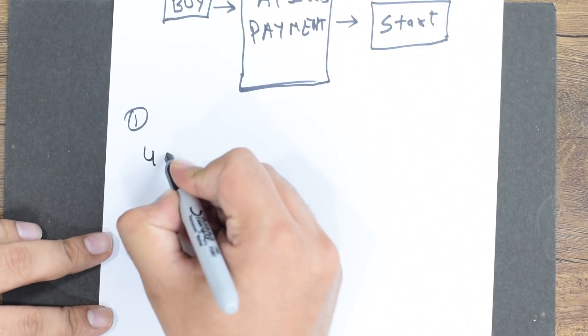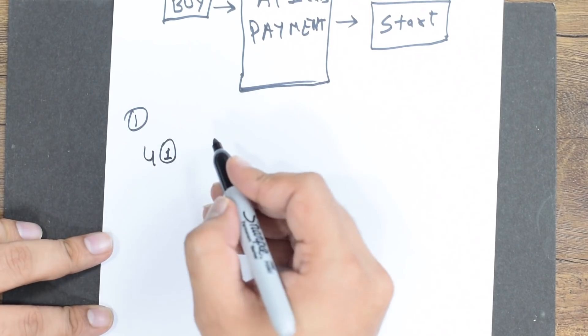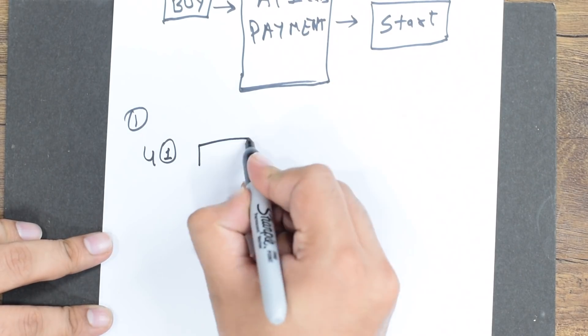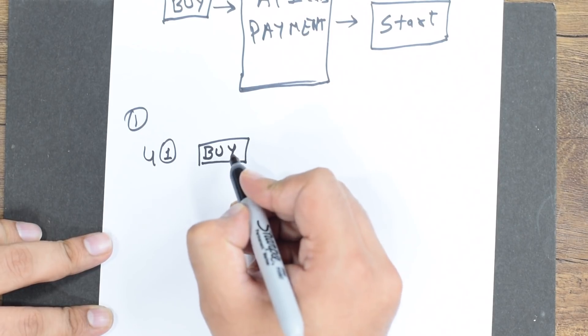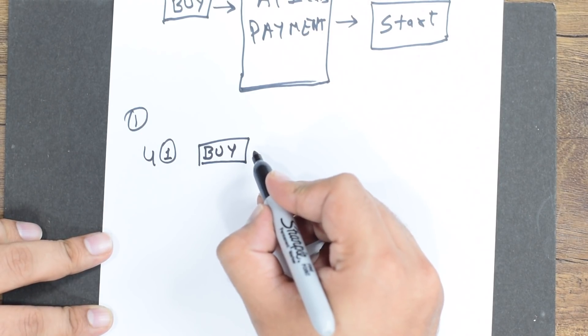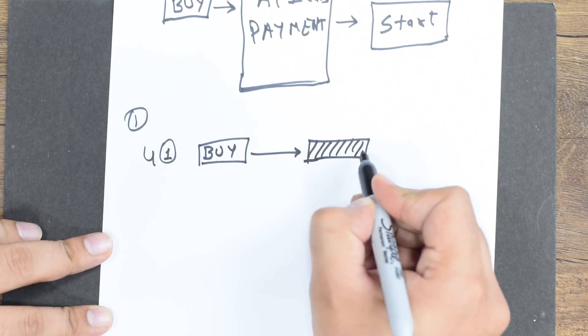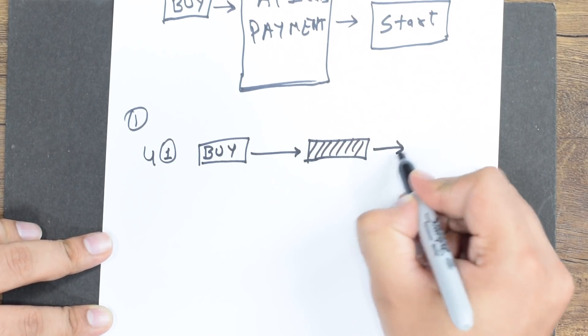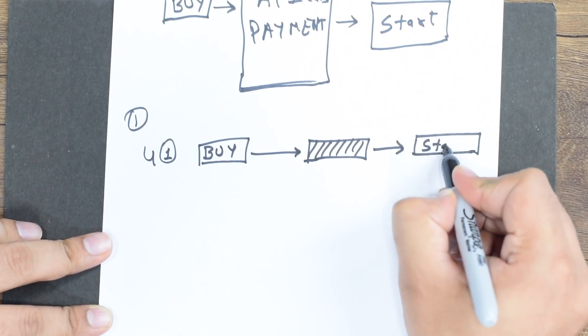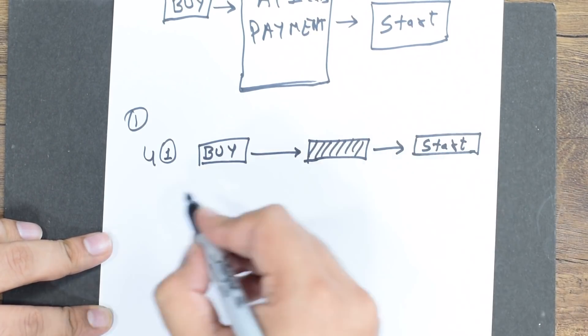Time for some bonus information. There are two concepts when writing the BLoC pattern. Let's say we have user one. User one clicks on the buy button, which goes through the magical black box that does the buying job, and then simply starts a course. Now, during this period, let's say user two comes in and tries to listen to the stream — and by the way, whenever somebody tries to do that, we call it listening to the stream. If somebody is already buying, user two should not be allowed. This is known as a single subscription — no other user should be allowed to listen to or subscribe to the stream.